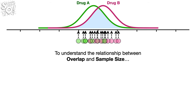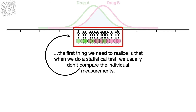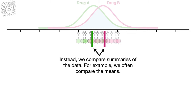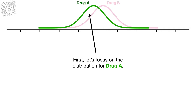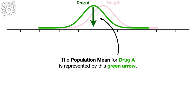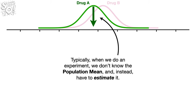To understand the relationship between overlap and sample size, the first thing we need to realize is that when we do a statistical test, we usually don't compare the individual measurements. Instead, we compare summaries of the data. For example, we often compare the means. So let's see what happens when we calculate means with different sample sizes. First, let's focus on the distribution for drug A. The population mean for drug A is represented by this green arrow. Typically, when we do an experiment, we don't know the population mean and, instead, have to estimate it.